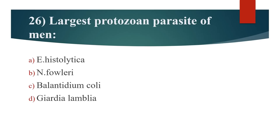26th question: Largest protozoan parasite of man? Option A: Entamoeba histolytica. Option B: Naegleria fowleri. Option C: Balantidium coli. Option D: Giardia lamblia. Answer is Option C: Balantidium coli.